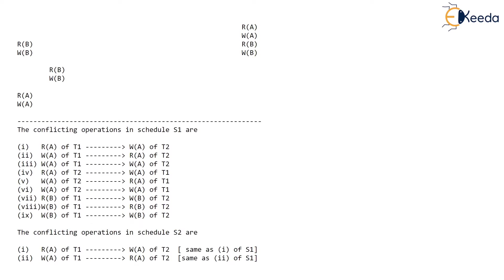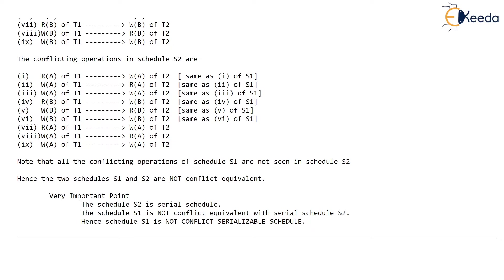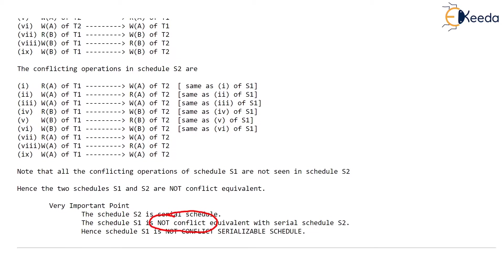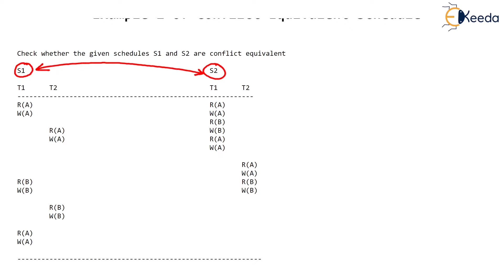In the previous video we proved that S1 and S2 are not conflict equivalent. But what if the two schedules are conflict equivalent? Let's say S1 and S2 are conflict equivalent and one of them, like S2, is a serial schedule. Then if S1 is conflict equivalent to serial schedule S2, then S1 is called a conflict serializable schedule.